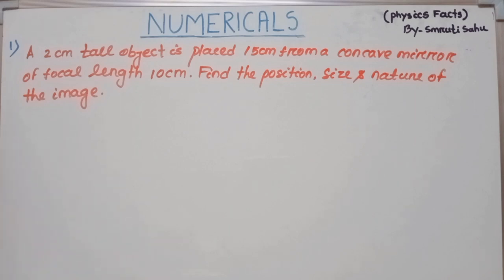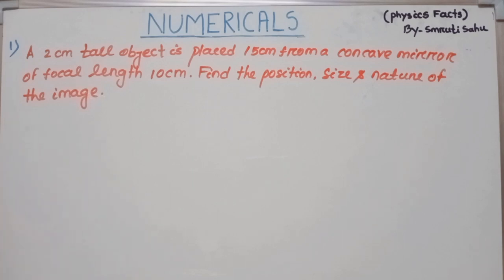First question: a 2 cm tall object is placed 15 cm from a concave mirror of focal length 10 cm. Find the position, size, and nature of the image.